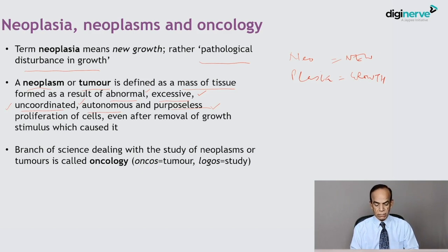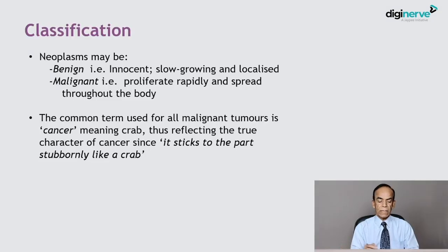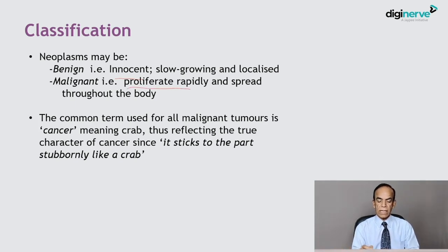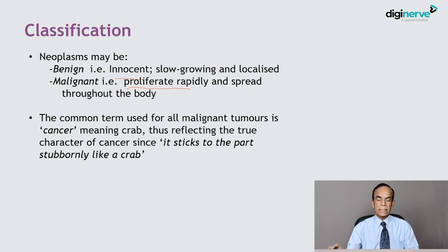The branch of science that deals with the study of neoplasms or tumors is called oncology — 'oncos' means tumor and 'logos' means study. Neoplasms or tumors may be classified into benign and malignant. Benign are innocent, slow-growing, localized tumors, while malignant are rapidly proliferating tumors that spread through the body. The common term used for malignant tumors is cancer.